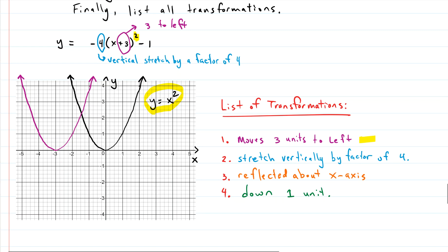It's being pushed away from the x-axis — four units higher than it would have been. We draw that in light blue. Then we list our transformation: stretched vertically by a factor of four. The next thing to look for is reflections. We have a negative multiplied out in front, which reflects about the x-axis. So we redraw — the parabola flips down. We note that: reflected about the x-axis.